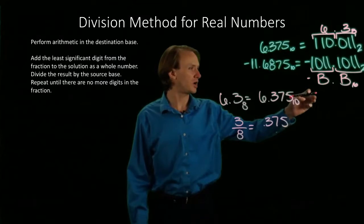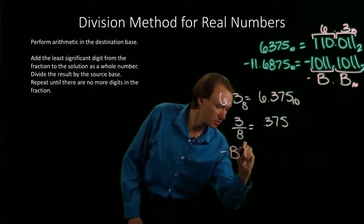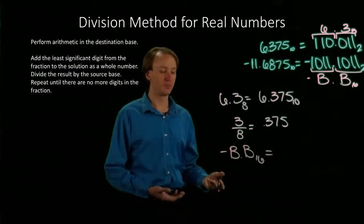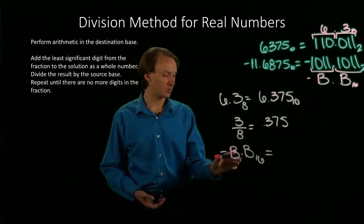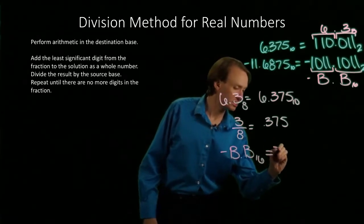For the second one I have negative b point b in hexadecimal, and I want to convert this to decimal. I will start with the whole number part, which is negative 11 in decimal.